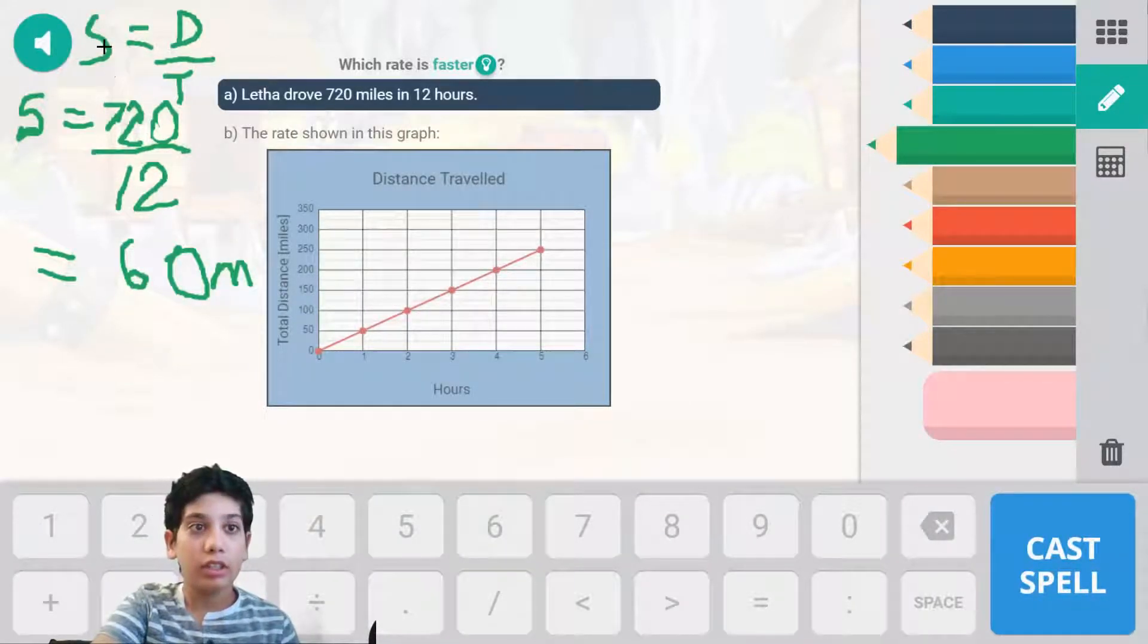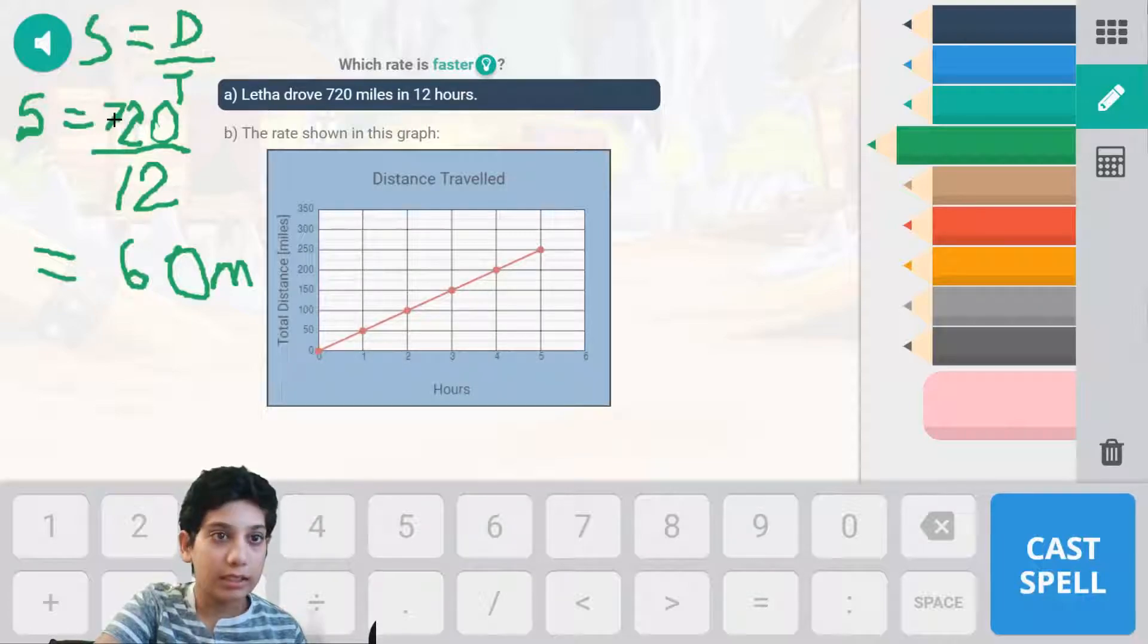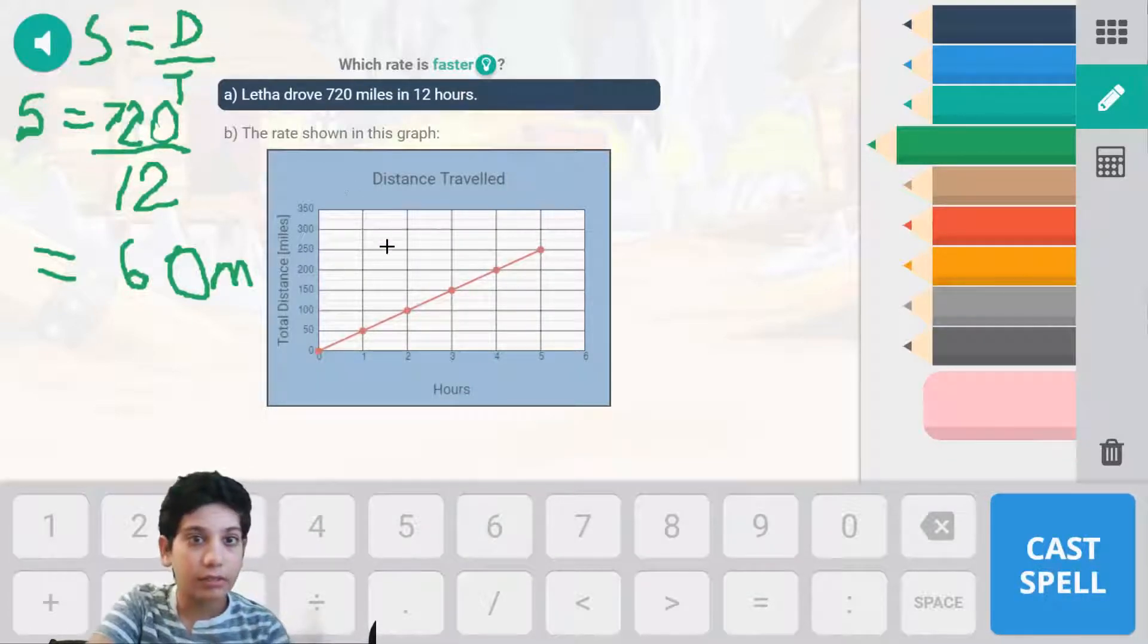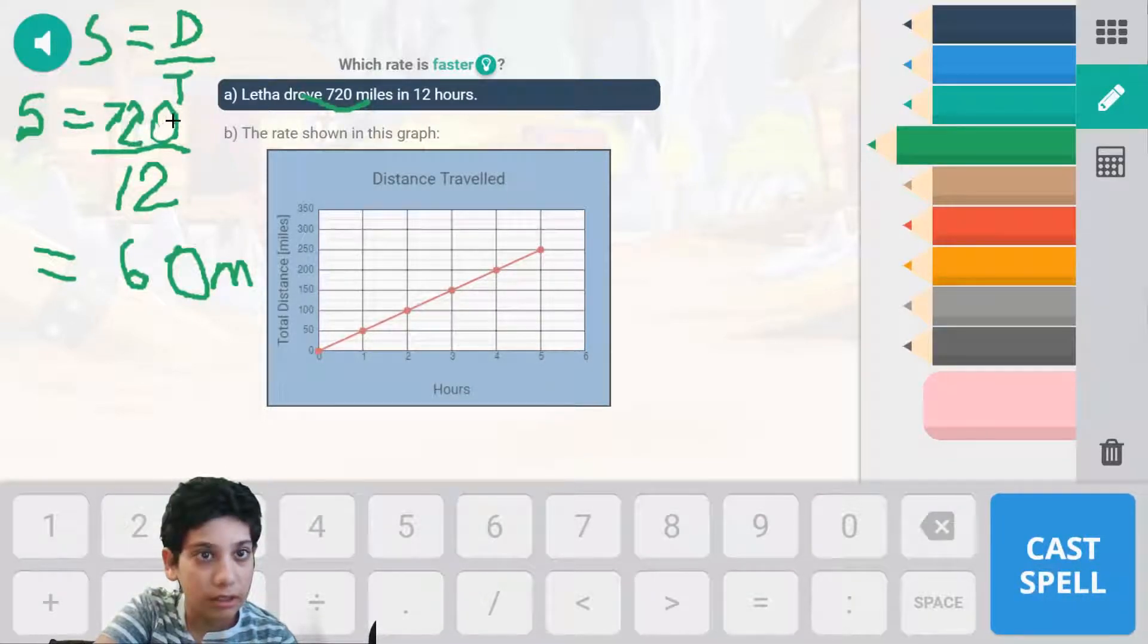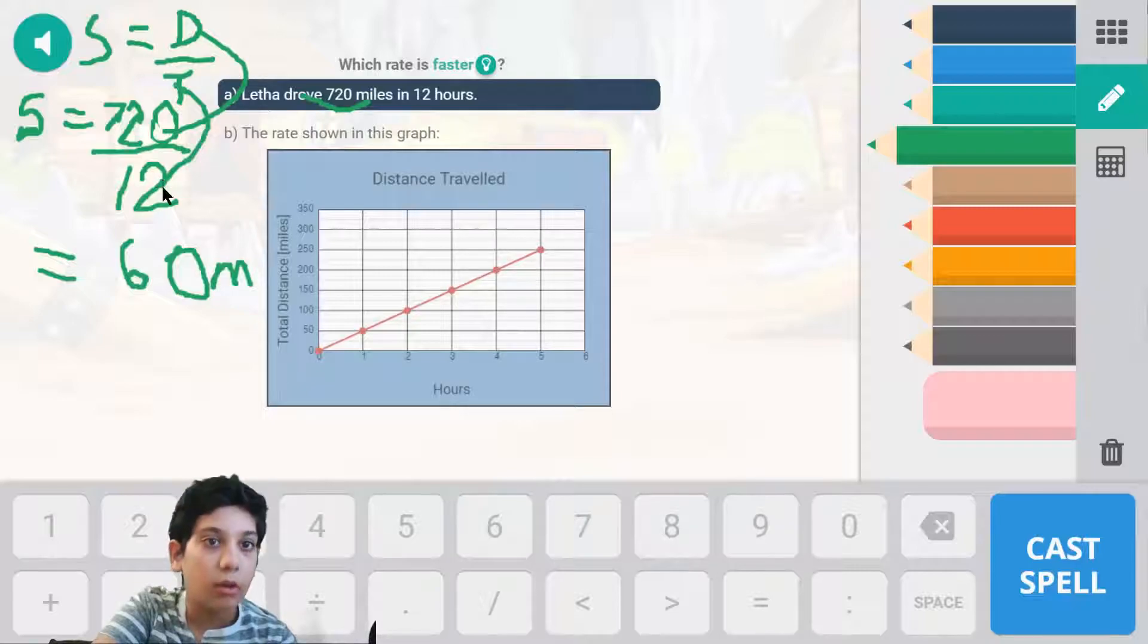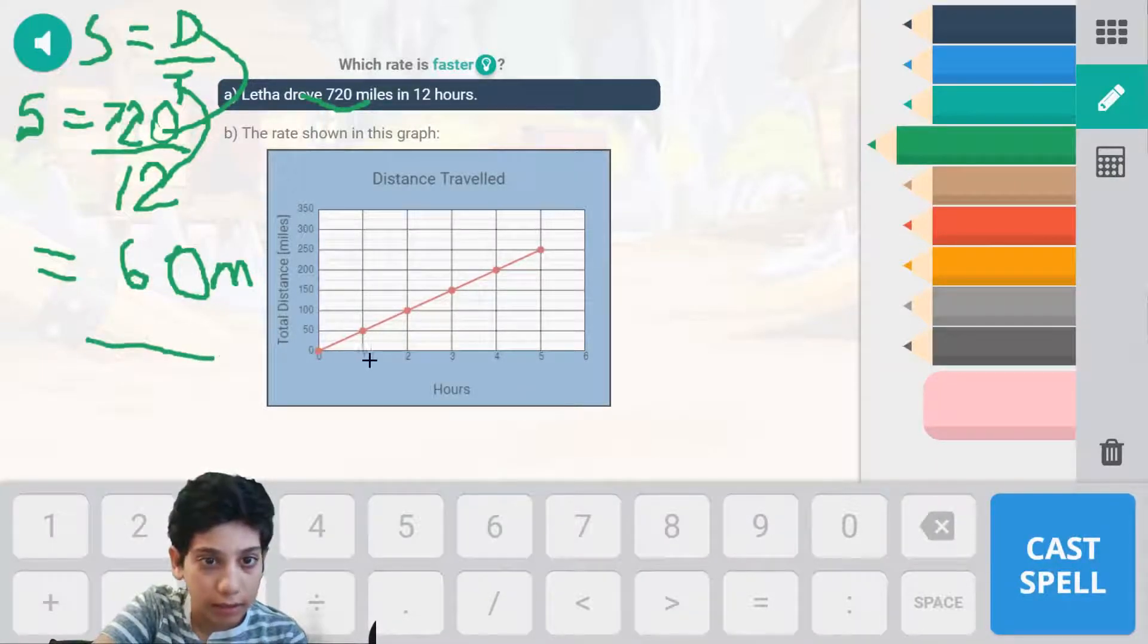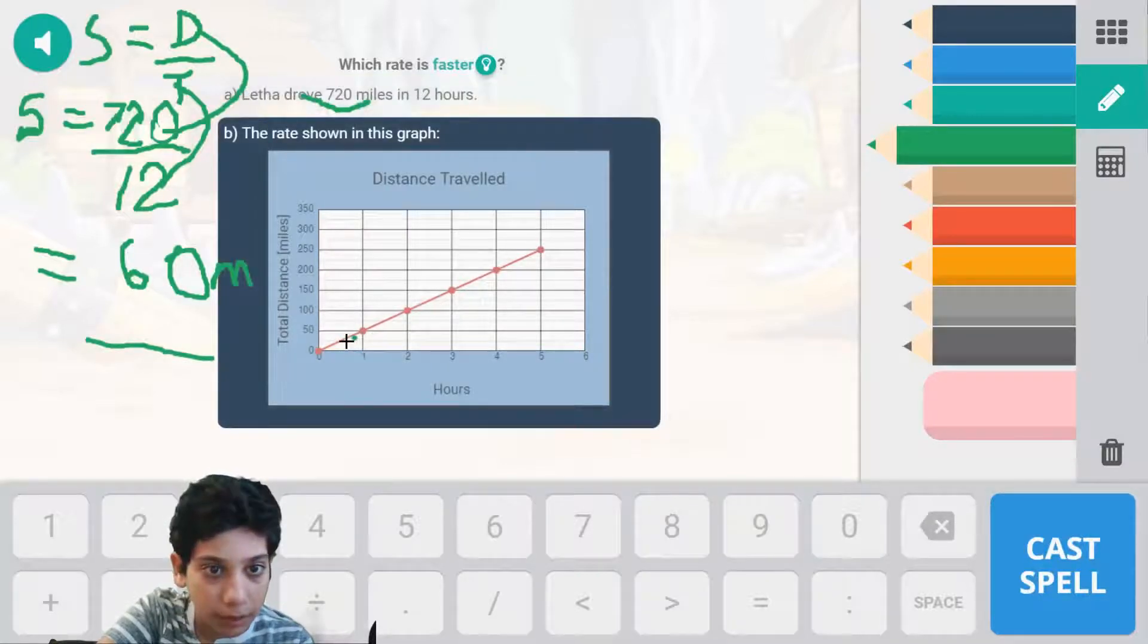So to calculate the answer, speed is equivalent to distance upon time. So that basically says that to figure out the answer, she went 720 miles, that's distance, and time in 12 hours. So the answer to that is 60 miles per hour. Now let's go to here. Here it's pretty obvious because it stops at 50 each hour.